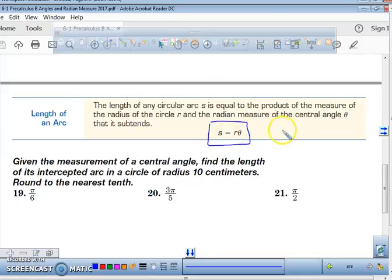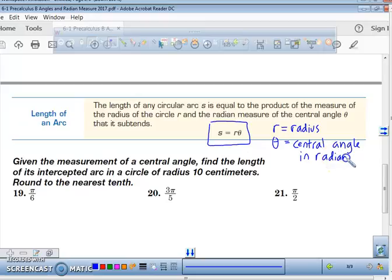I need you to make sure as you write the formula down that you write r is equal to the radius of your circle. And theta is equal to the measure of your central angle, but in radians. It's not in degrees. Your theta in this formula has to be in radians.